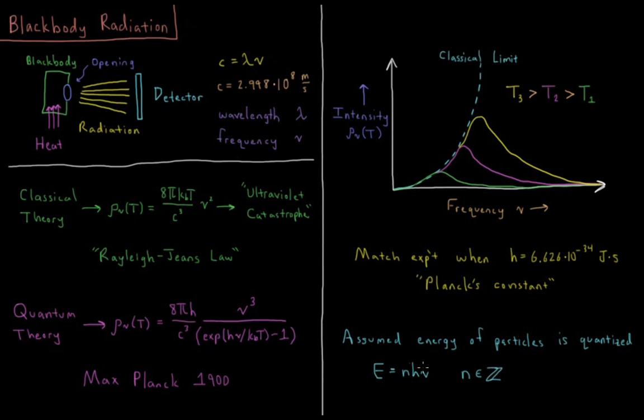This was the kind of quantum hypothesis that Planck used, and it solved this problem of the ultraviolet catastrophe and predicted the radiation coming out of this blackbody. This was the first application where the quantum hypothesis solved a problem in classical physics. Throughout this first chapter, we'll look at a few more examples of that.